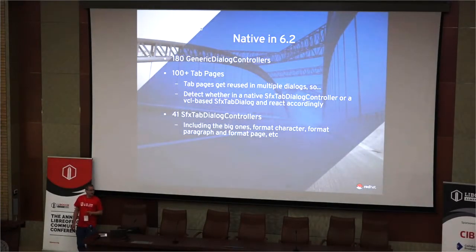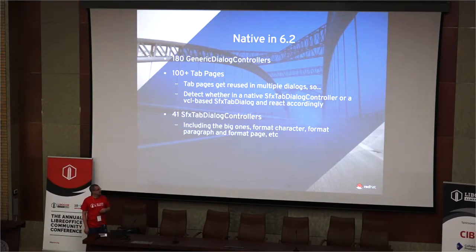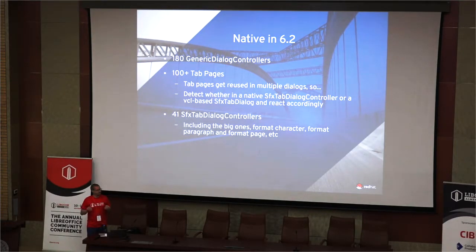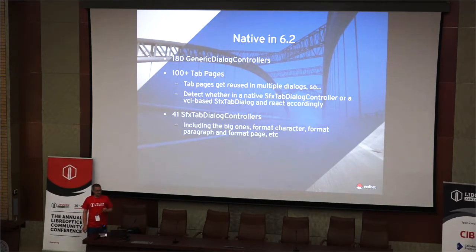Moving on to 6.2, the dialog controller — each simple dialog that contains one single pane — is a generic dialog, so a generic dialog controller covers about 180 dialogs. And for all the multi-tab page dialogs, it's impossible to convert all of them in one go. You have to come up with a scheme where a tab page can live inside a new native GTK dialog and also within the existing VCL dialogs, so you can convert them one at a time. You get 100 tab pages converted, though you might not see any of them in a native dialog as of yet.